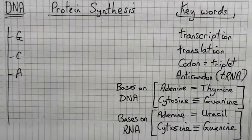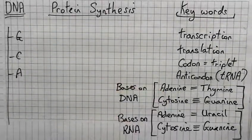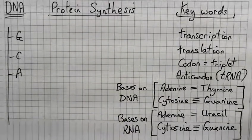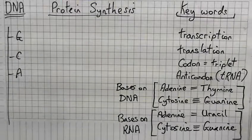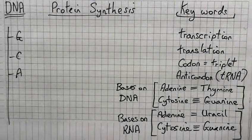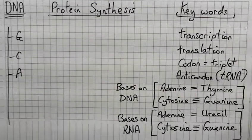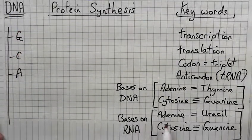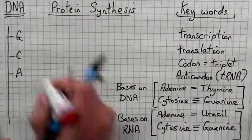Alright, and bases that are floating around in the nucleus will, so RNA bases, because we're making protein, RNA bases will join. So we'll do RNA bases in red. So what joins to RNA? What joins to G? C.